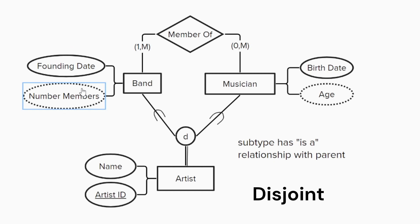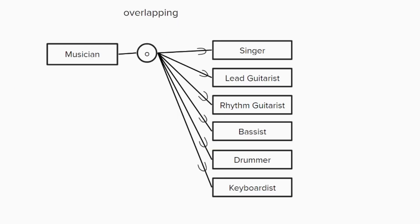Note that for simplicity, we are not accounting for bands whose membership changes over time. It is also possible for a specialization circle to contain an O, meaning that the subsets are overlapping, which is the case for the subsets of the musician entity. Musicians can take many forms — they can be singers, different types of guitarists, drummers, keyboardists, or other types. Since we are leaving some options out, such as violinist, there is only a single line to the specialization circle indicating partial participation. The O is used because a musician can fill multiple roles in a band, such as both singer and lead guitarist, or any combination of roles.